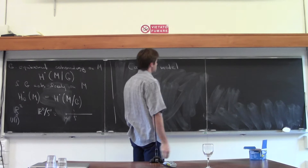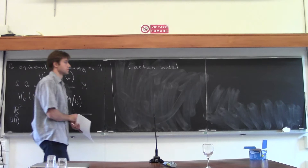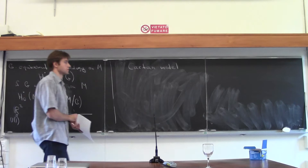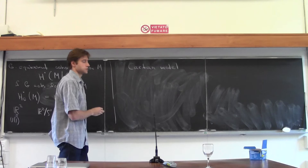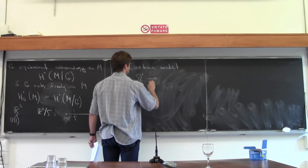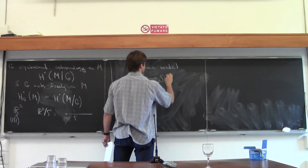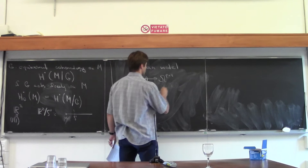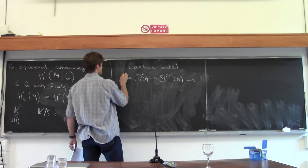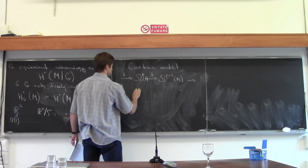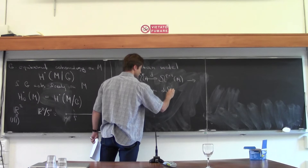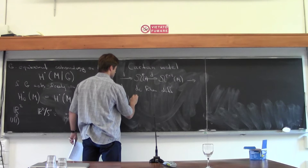The Cartan model is a definition for equivariant cohomologies analogous to the usual de Rham definition of cohomologies. Recall that in the de Rham definition, we consider the complex of differential forms on M. Omega^p would be differential forms of degree p on M, and we have the complex with the de Rham differential. The cohomology in degree p is the kernel modulo the image of d.